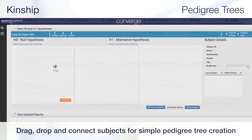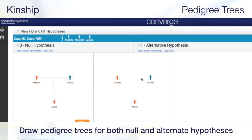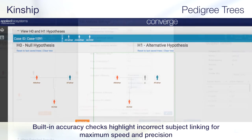Unlike other cumbersome software solutions, Converge makes creating pedigree trees simple and intuitive. Simply drag, drop, and connect various subjects quickly and easily, creating a variety of hypotheses by drawing pedigree trees for both null and alternate hypotheses. And with the software's built-in accuracy checks, Converge highlights incorrect linking of subjects for maximum speed and precision.